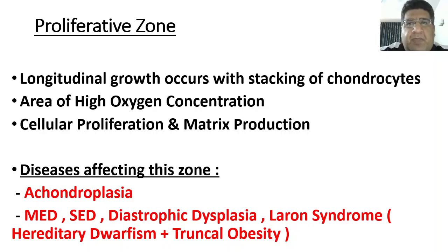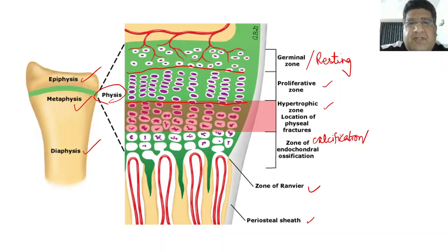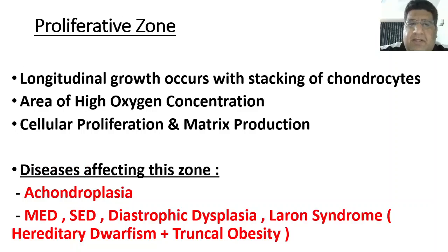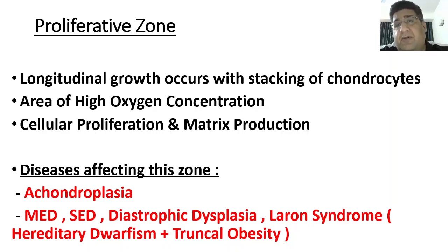Next we have the proliferative zone, where actual chondrocytic proliferation starts. The chondrocytes stack over one another, and there is a reason behind longitudinal growth — this stacking is how it happens. This is an area of high oxygen concentration. The actual cellular proliferation and production of extracellular matrix happen here. This is going to decide how much length a bone achieves — in other words, the height of an individual depends upon the height of their long bones, which in turn depends upon the proliferative zone of the physis.